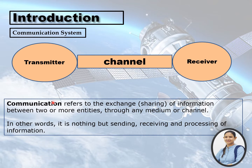Let's start with the general communication system. We know there are three basic elements of any communication system: these are the transmitter, a receiver, and a channel between the transmitter and receiver, which will ensure that data transmission between these two takes place.